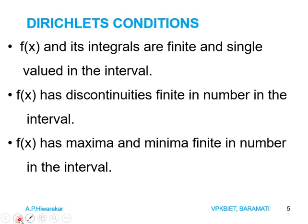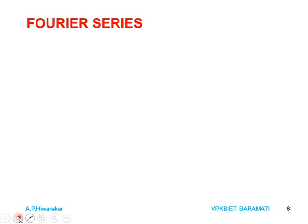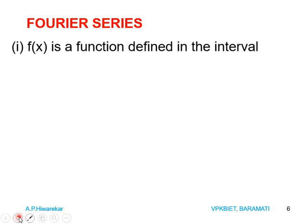Fourier series is an infinite series representation of a periodic function in terms of trigonometric sine and cosine functions. Now we will see what conditions are required to have a Fourier series of a function. Consider function F(x): we assume that F(x) and its integrals are finite and single-valued in the interval; F(x) has a finite number of discontinuities in the interval; and F(x) has a finite number of maxima and minima in the interval. These three conditions are called the Dirichlet conditions.